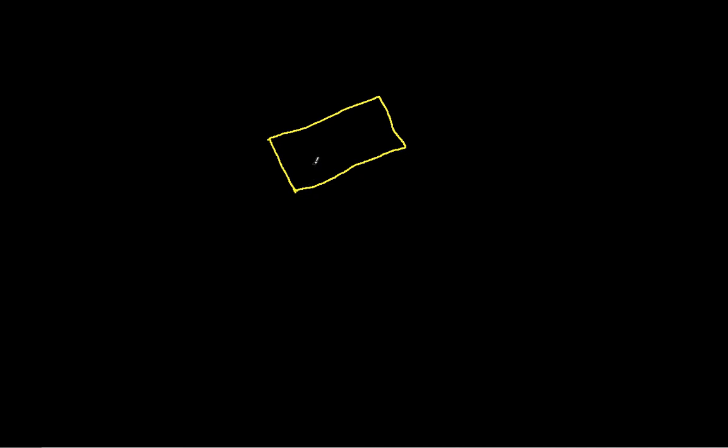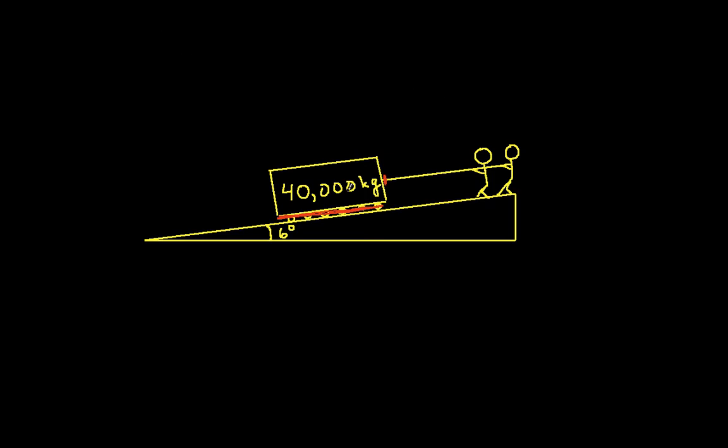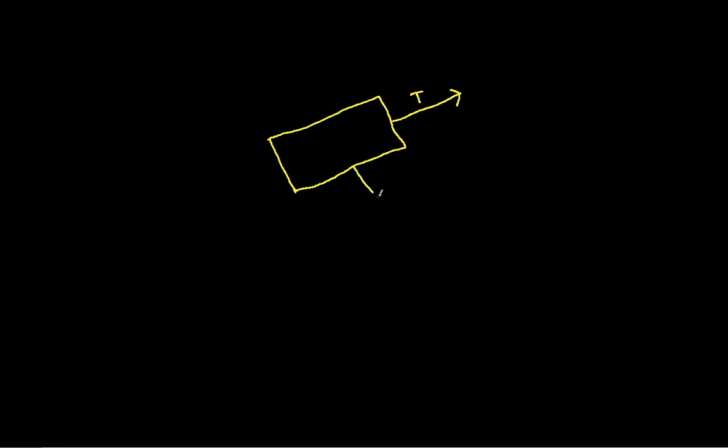I've sort of exaggerated the angle here. Hopefully that won't be too confusing. And now the points at which the block interacts with the environment. We have this force applied by the workers, which we'll call T for the tension in the cable. If we go back to our picture, the ramp will exert a normal force on the block. But because the rollers are set up so that it's frictionless, there won't be any force perpendicular to the normal force. So the only force that the ramp will exert on the block is a normal force. The normal force will look something like this. We'll call it N.